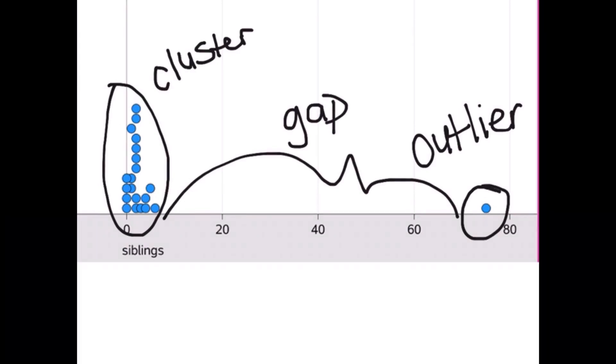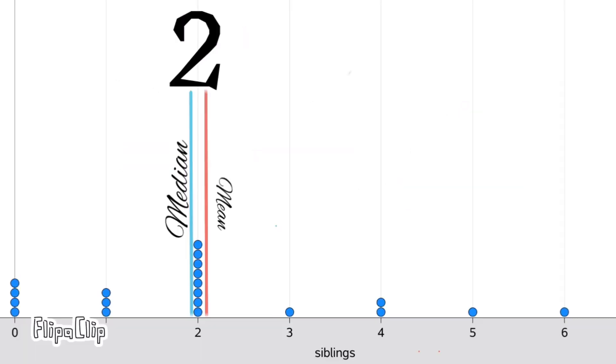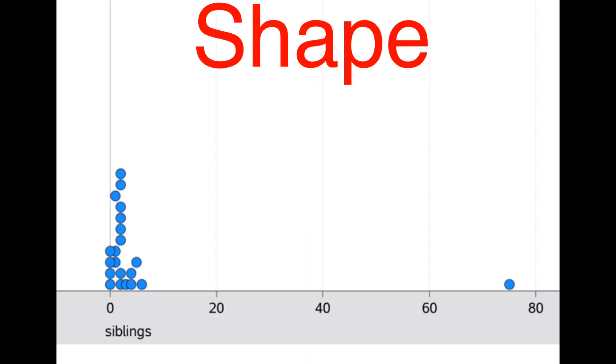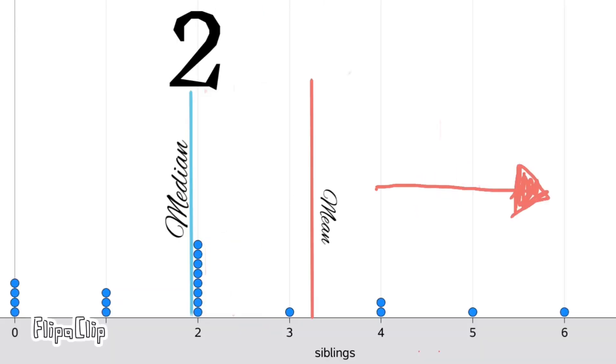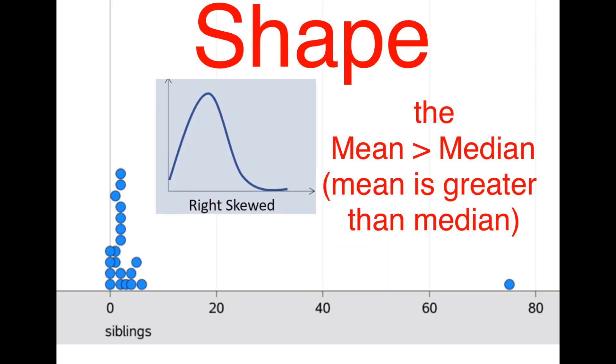So in conclusion, this outlier to the right pulled the mean towards it, making the shape of this data right skewed. The shape is right skewed or messed up on the right if the mean was pulled to the right or is greater than the median.